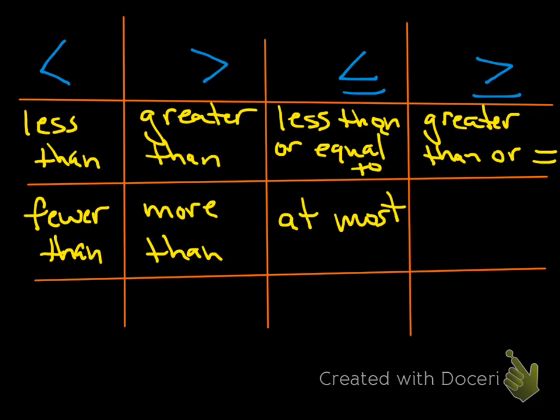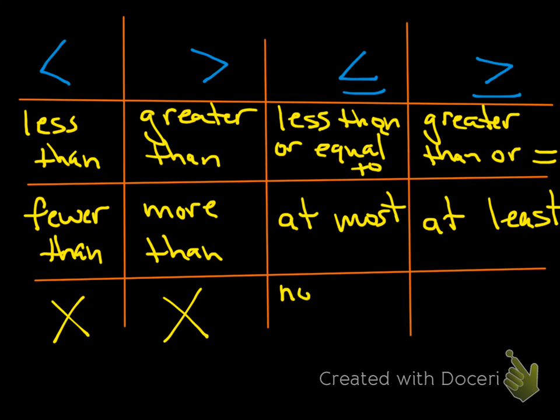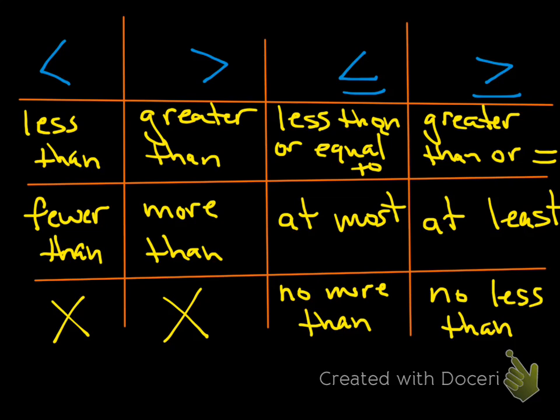The other vocabulary: 'no more than' means less than or equal to — like you can have no more than three zeros, so the most you can have is three, but you could have two, one, or zero. And 'no less than' means greater than or equal to — like your grade can be no less than an 80, meaning it can be 80 but it can't be anything smaller, so it has to be greater than or equal to 80.